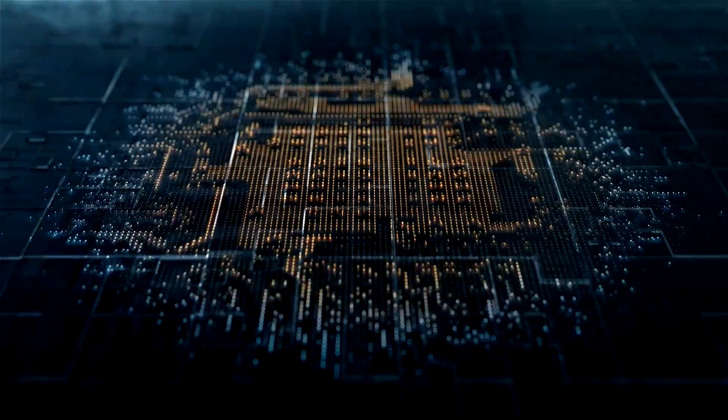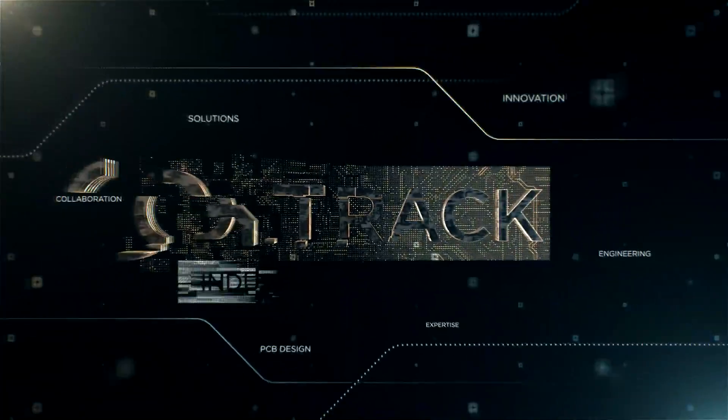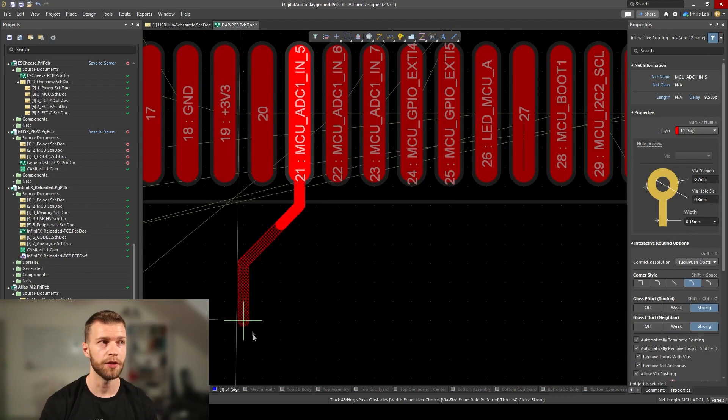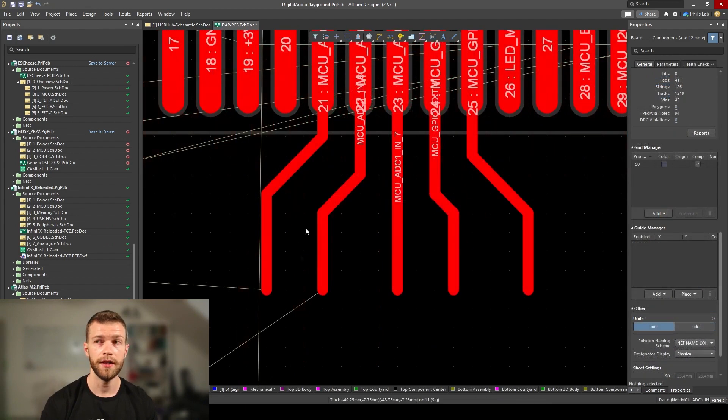From Altium Academy, they have a video on the most common beginner mistakes in PCB design. One of the biggest ones is maintaining proper spacing of your traces. If you have your traces too close together for too long of a run, you can have signals interfere with one another.